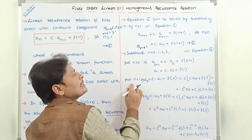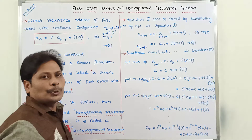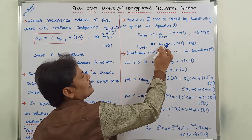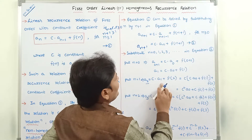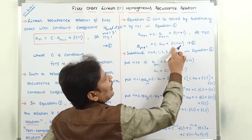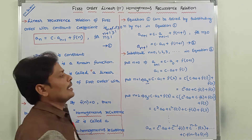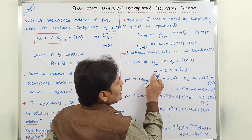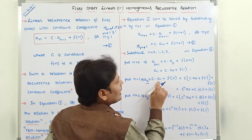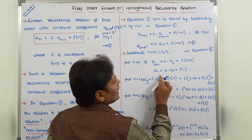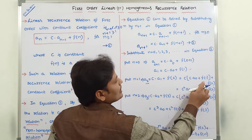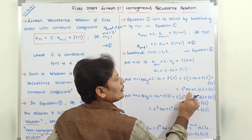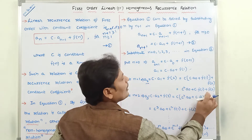Putting n = 1 in equation 2: a_2 = c · a_1 + f(2). Since a_1 = c · a_0 + f(1), substituting gives a_2 = c · (c · a_0 + f(1)) + f(2) = c² · a_0 + c · f(1) + f(2).